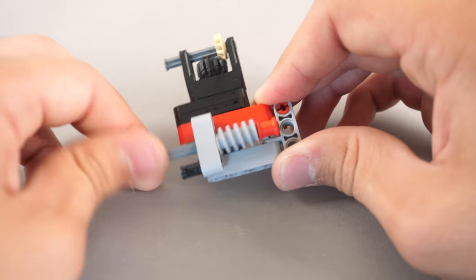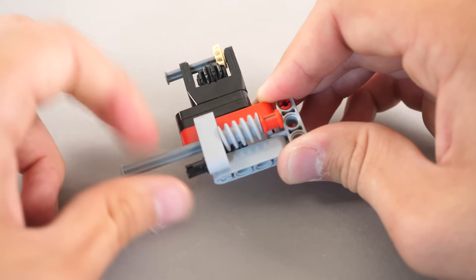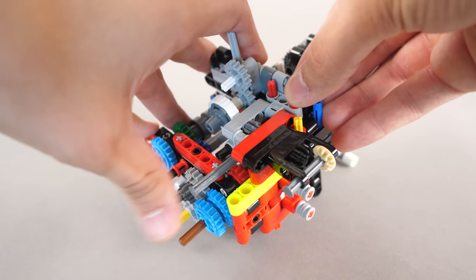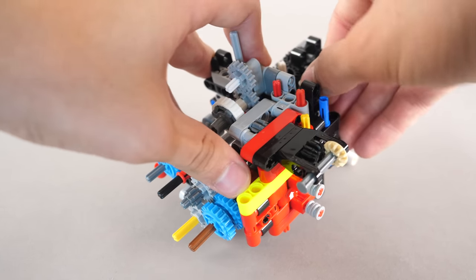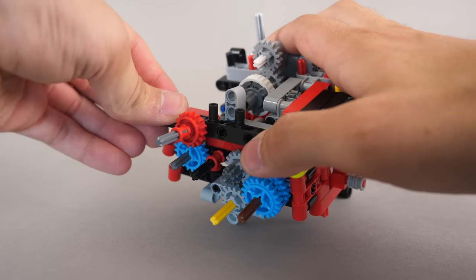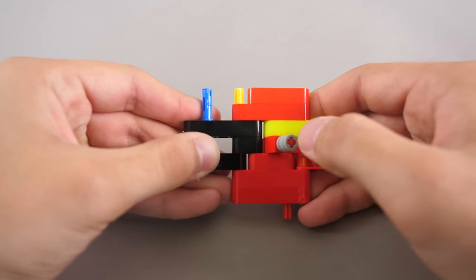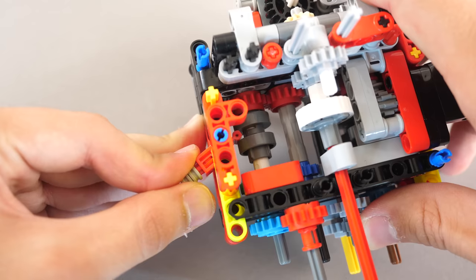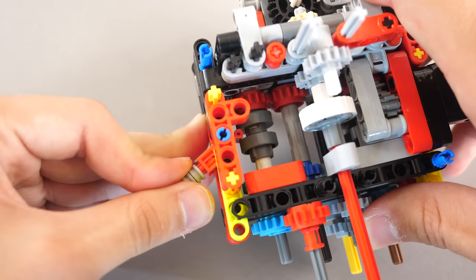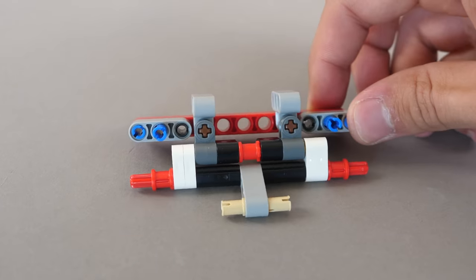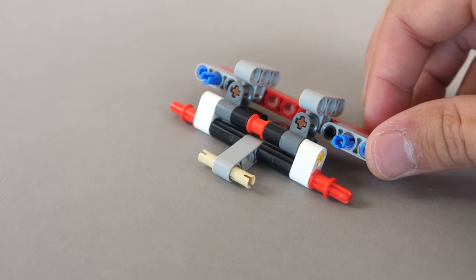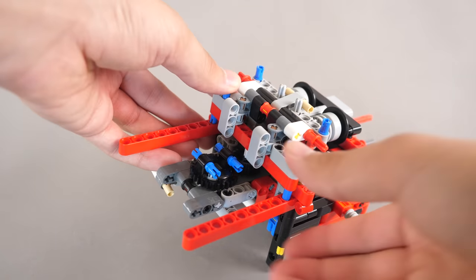Following that, we build this tiny little module with the worm gear setup, and we connect it onto the gearbox. It will be responsible for the winch. Then, we add a little beam to secure everything in place. We build another module with the changeover catch switch, and we connect it onto the gearbox. Make sure that the switch is properly aligned with the driving ring. Following that, we build this module with the beams, and secure it on top of the gearbox.